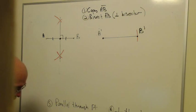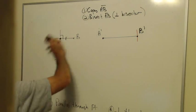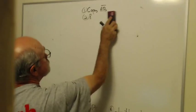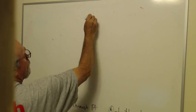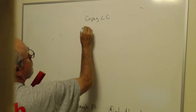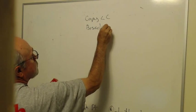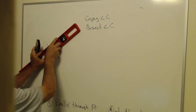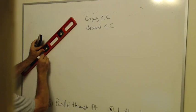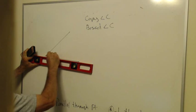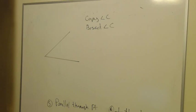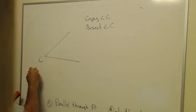The next two constructions deal with angles. So I need to draw an angle here, and we're going to copy the angle and then we're going to bisect the angle. I will copy angle C and then I will bisect angle C. So here's an angle C for us to work with. I called it ABC on the original sheet, but the other points just get in the way, so I'm just going to call it angle C.